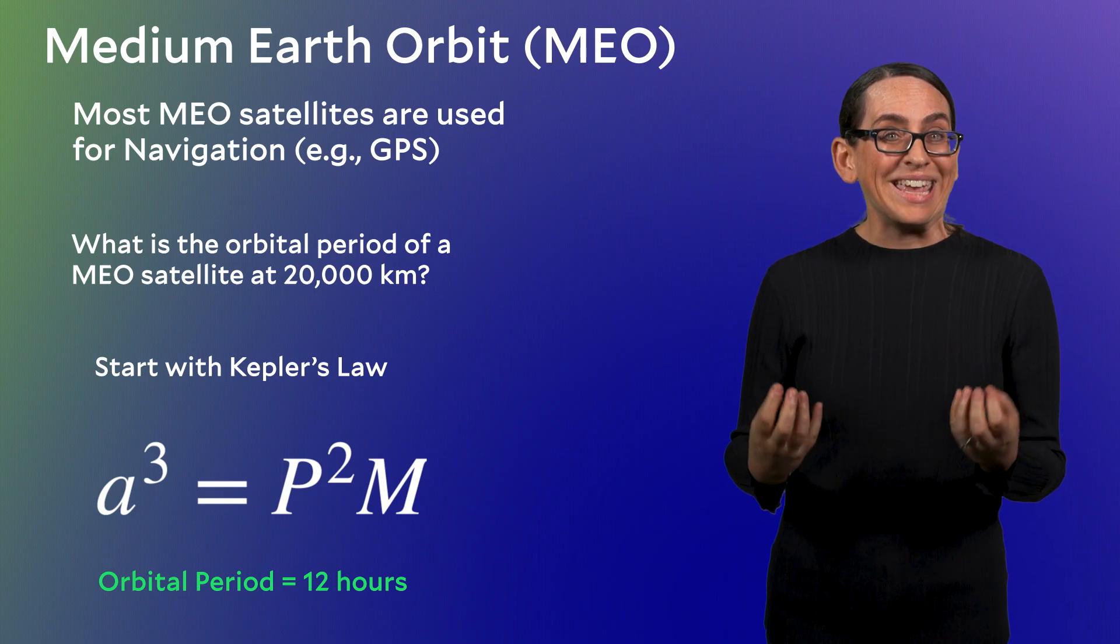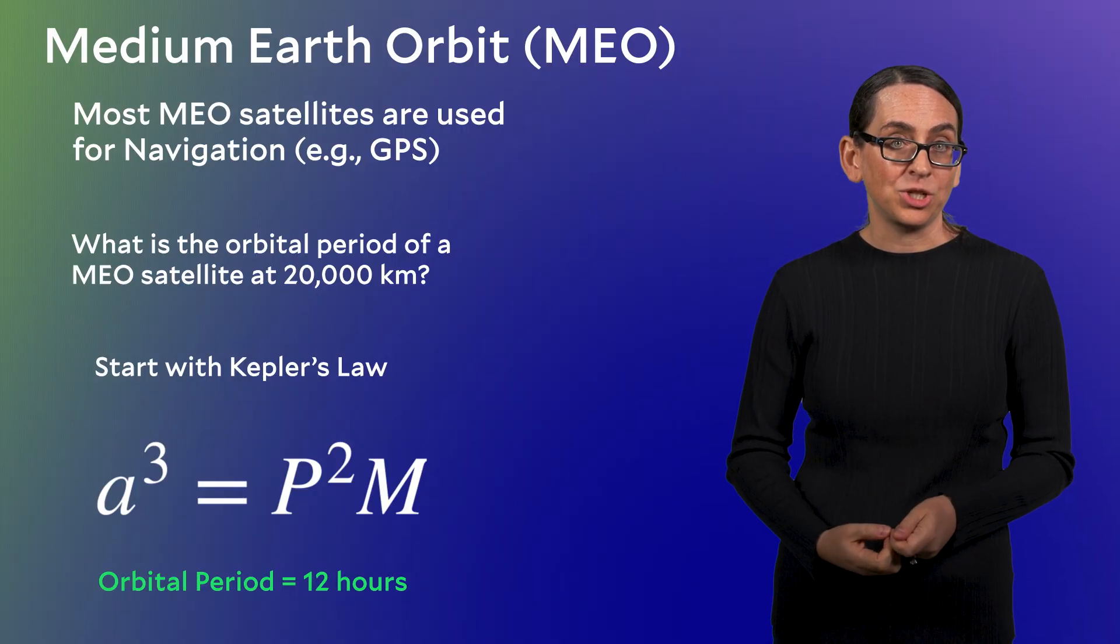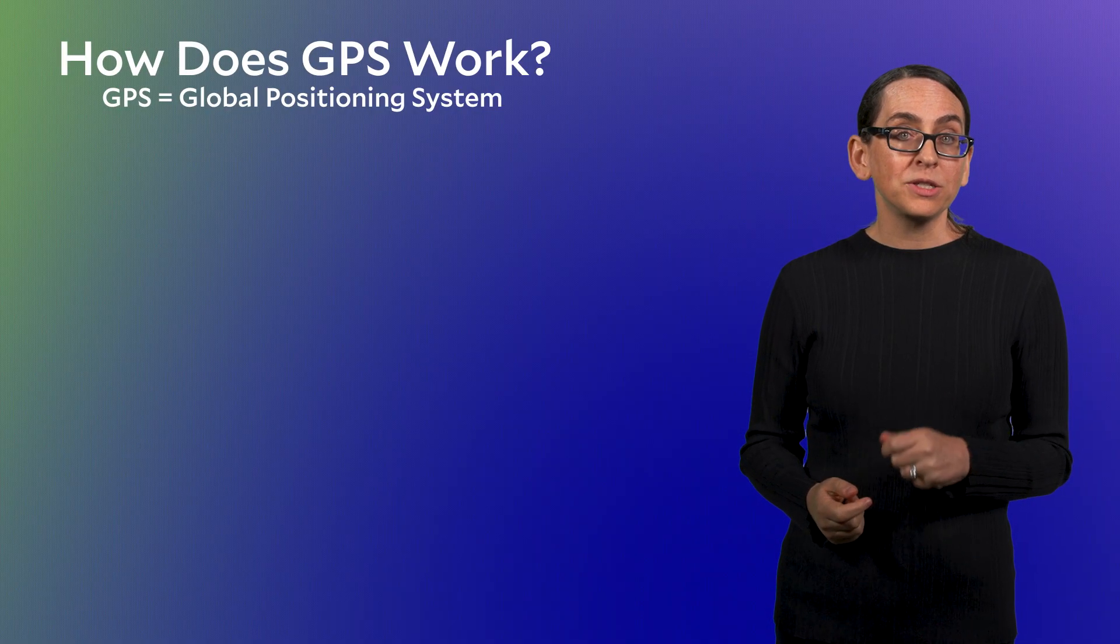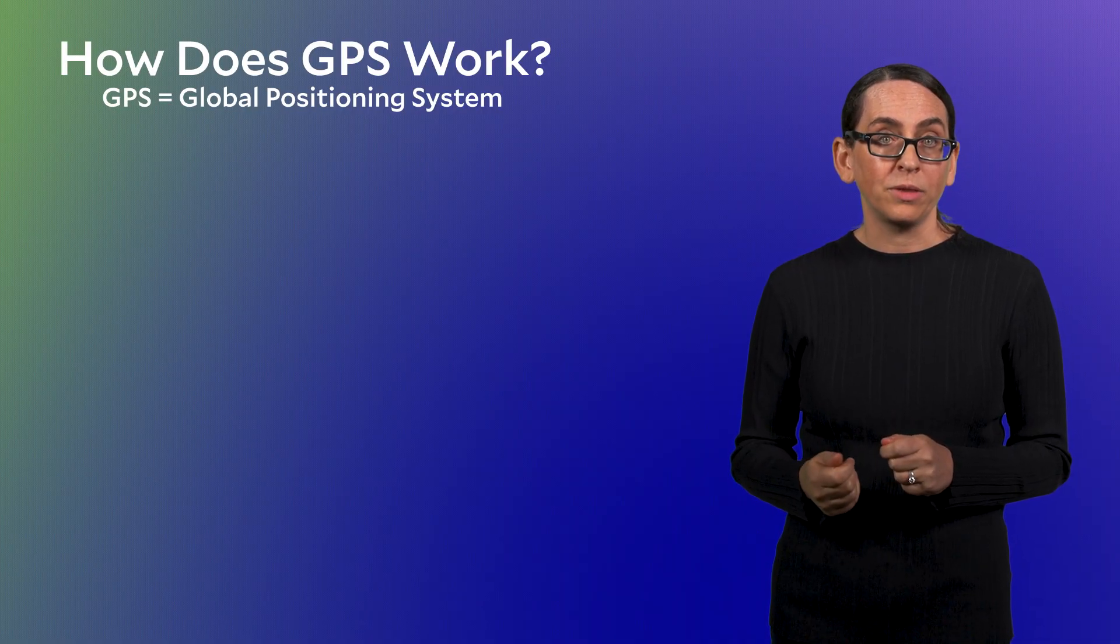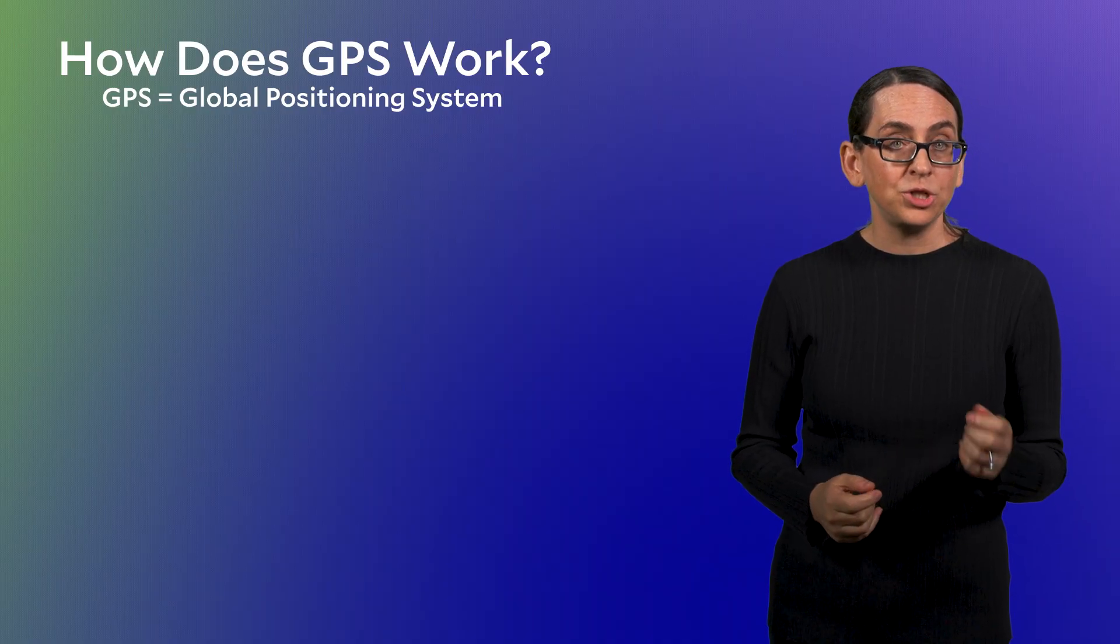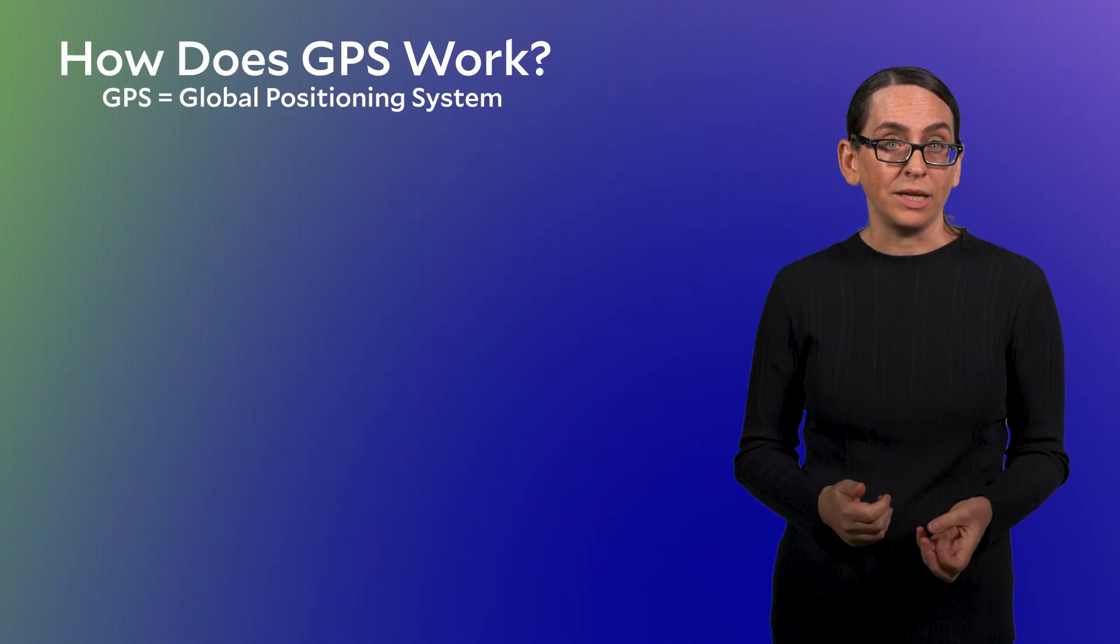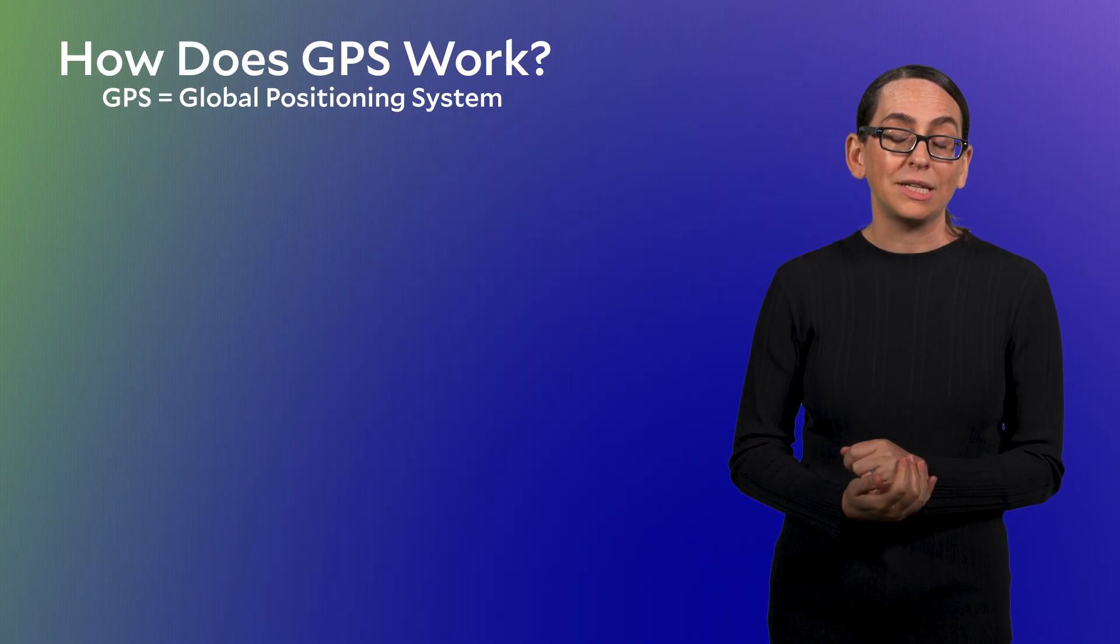In medium Earth orbit, there are several different sets of satellites that are dedicated to navigation. The U.S. runs a fleet of about 30 or so satellites orbiting in medium Earth orbit that we rely on for an increasingly large set of tasks. These are the GPS, or Global Positioning Satellites. There's a pretty good chance that you've used this system probably even today.